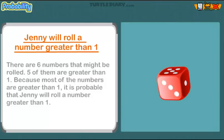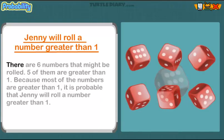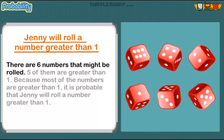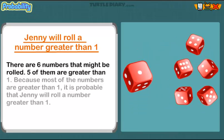Jenny will roll a number greater than one. There are six numbers that might be rolled. Five of them are greater than one. Because most of the numbers are greater than one, it is PROBABLE that Jenny will roll a number greater than one.